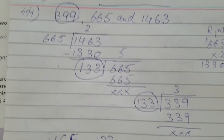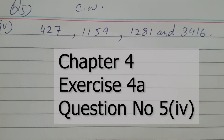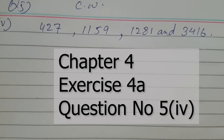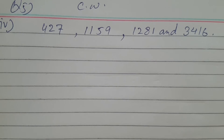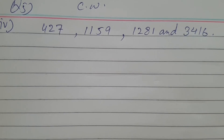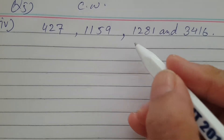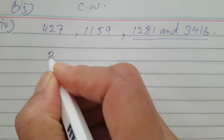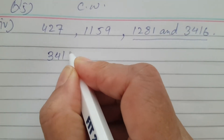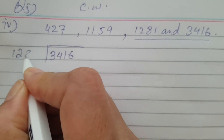133 is the greatest number which can divide 339, 665, and 1463 exactly without leaving any remainder. Do the rough work and both divisions and write down the answer. This is the last part of question number five — part four — having four different numbers. Find the HCF, the greatest number which can divide all of them exactly without leaving any remainder. Take the first two numbers: 3416 as the dividend and 1281 as the divisor.